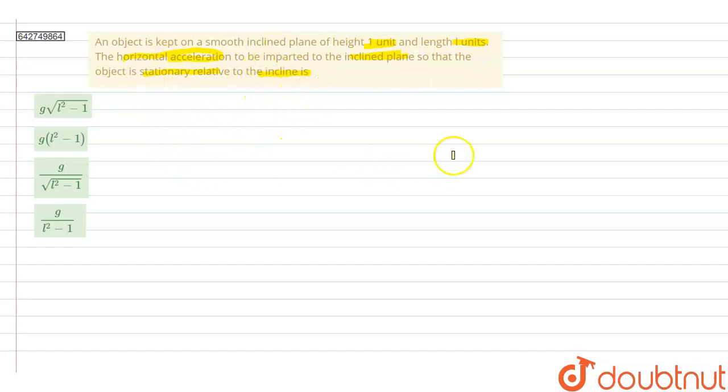Let us try to draw this scenario in a diagram. Here we have this inclined plane, and let us assume that the angle of incline is theta. Here there is a box kept on this inclined plane and its mass is m. The height of the incline is one unit and the length will be l units.